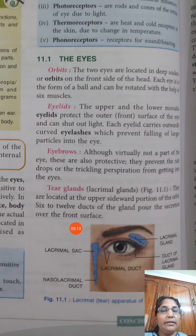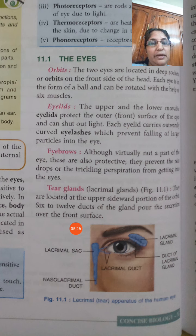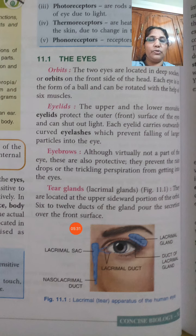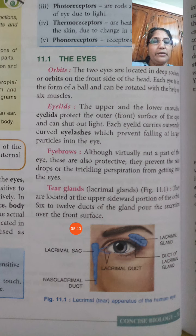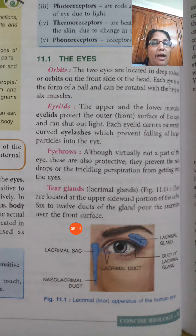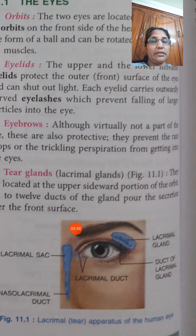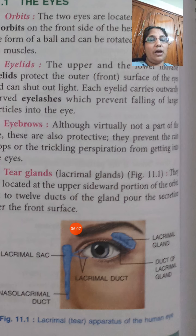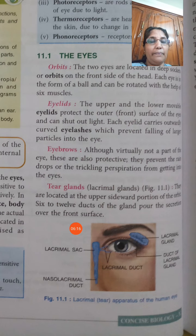In the eye there is another structure known as the tear gland, or the lacrimal gland. You should know its position — it was asked as an unexpected question in the board examination. The correct position is the upper sideward portion of the orbit. Writing just 'upper' is not enough — 'upper sideward portion' is the correct location of the lacrimal gland.